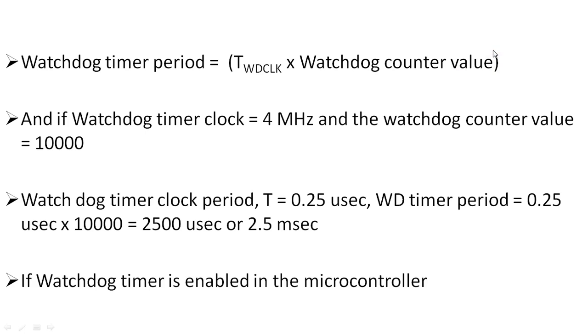We have not considered the pre-scaler here. If the watchdog timer clock is selected as 4 MHz and the counter value is selected as 10,000, the watchdog timer period is 0.25 microseconds times 10,000, which is 2500 microseconds or 2.5 milliseconds.